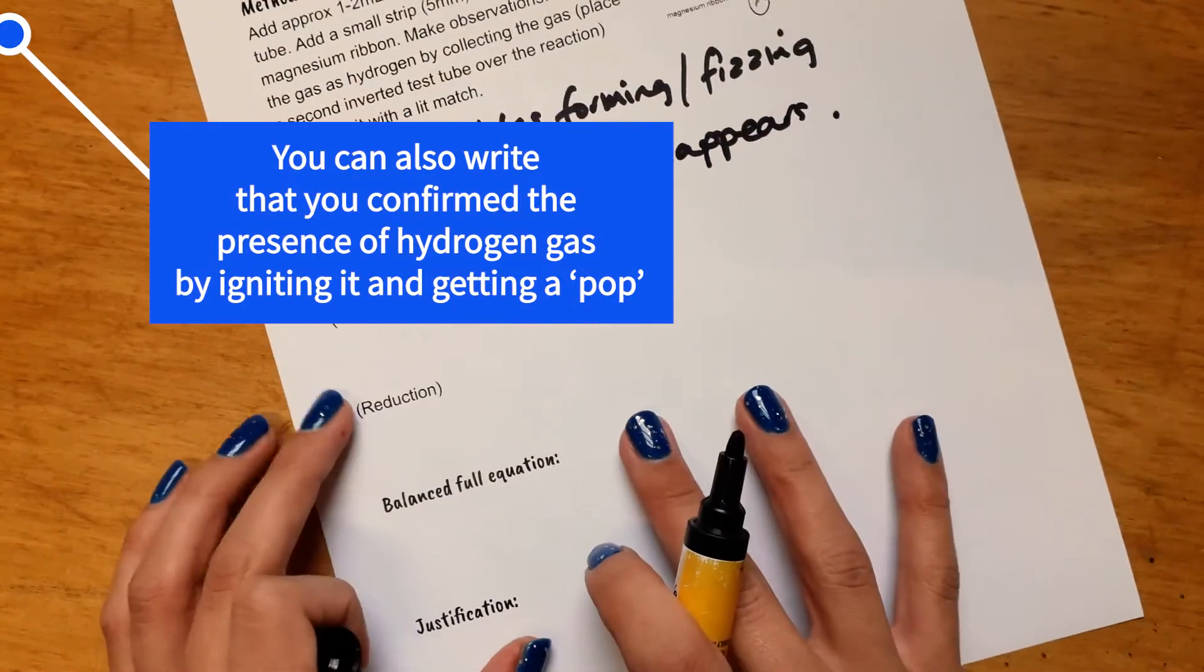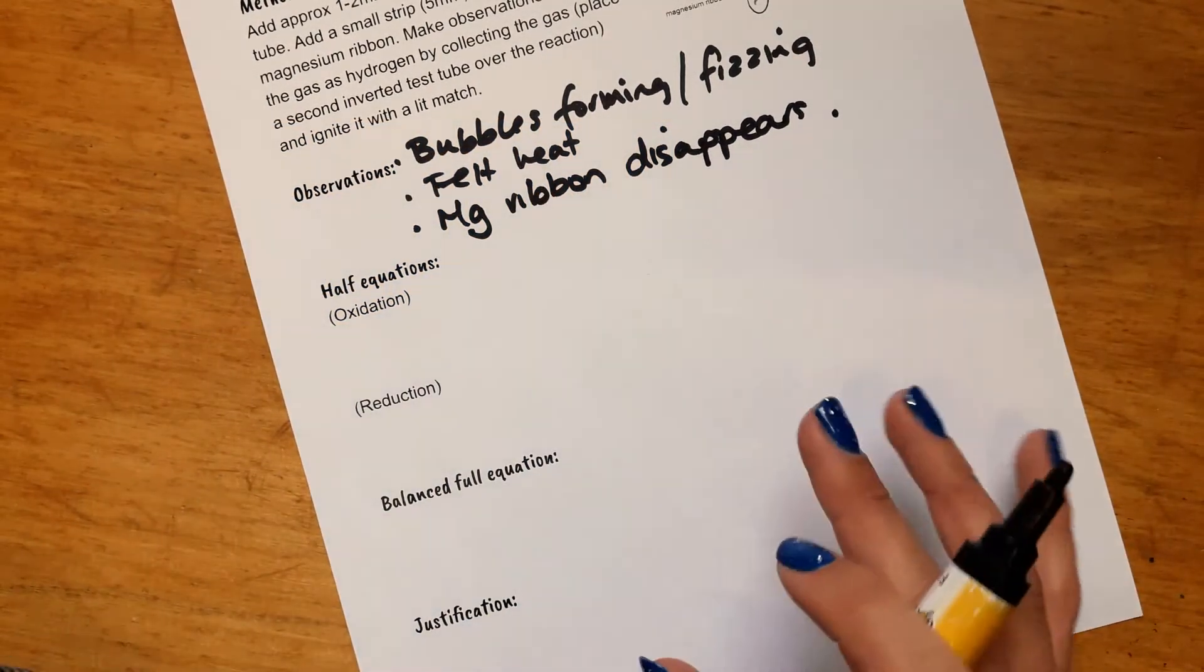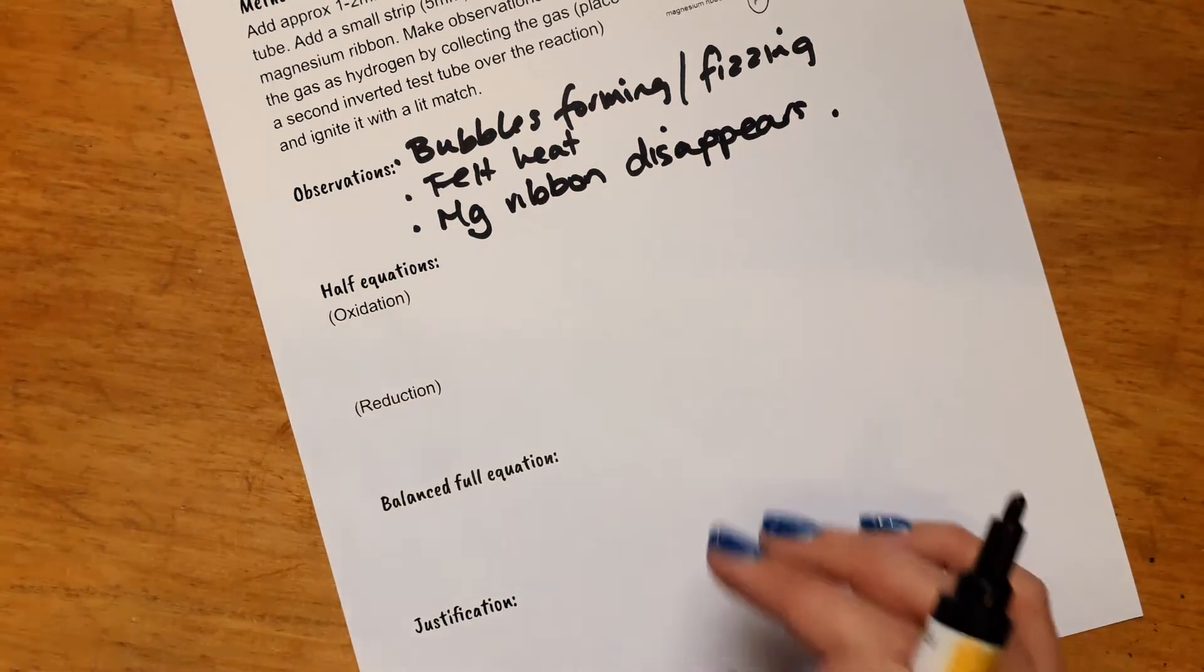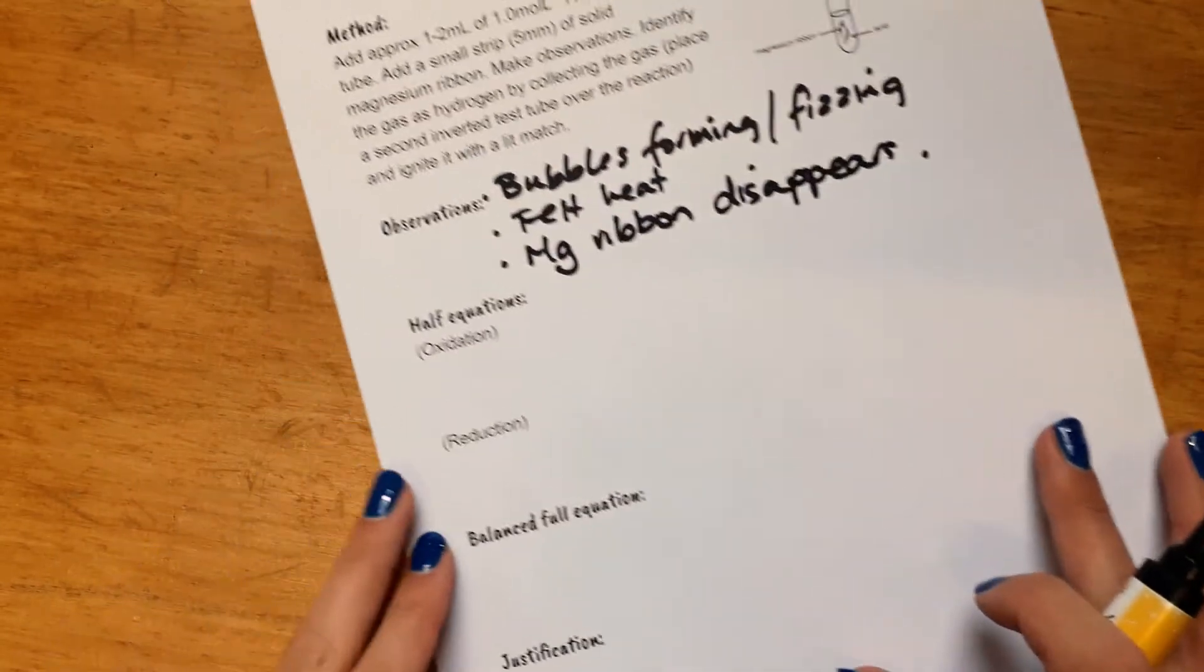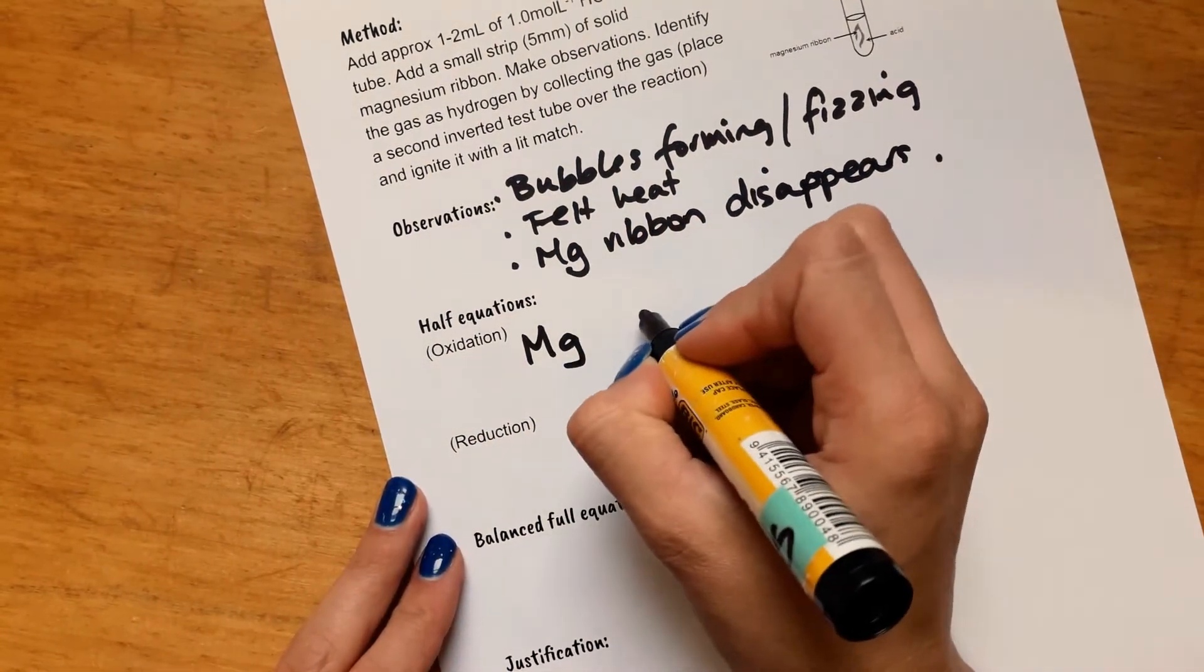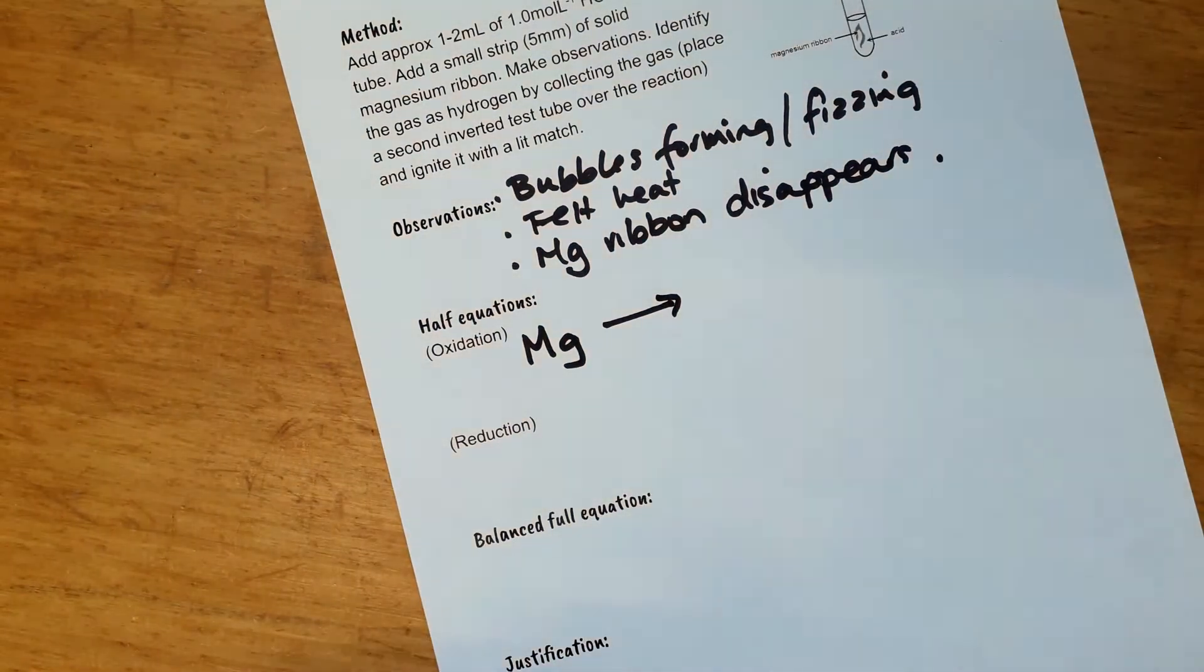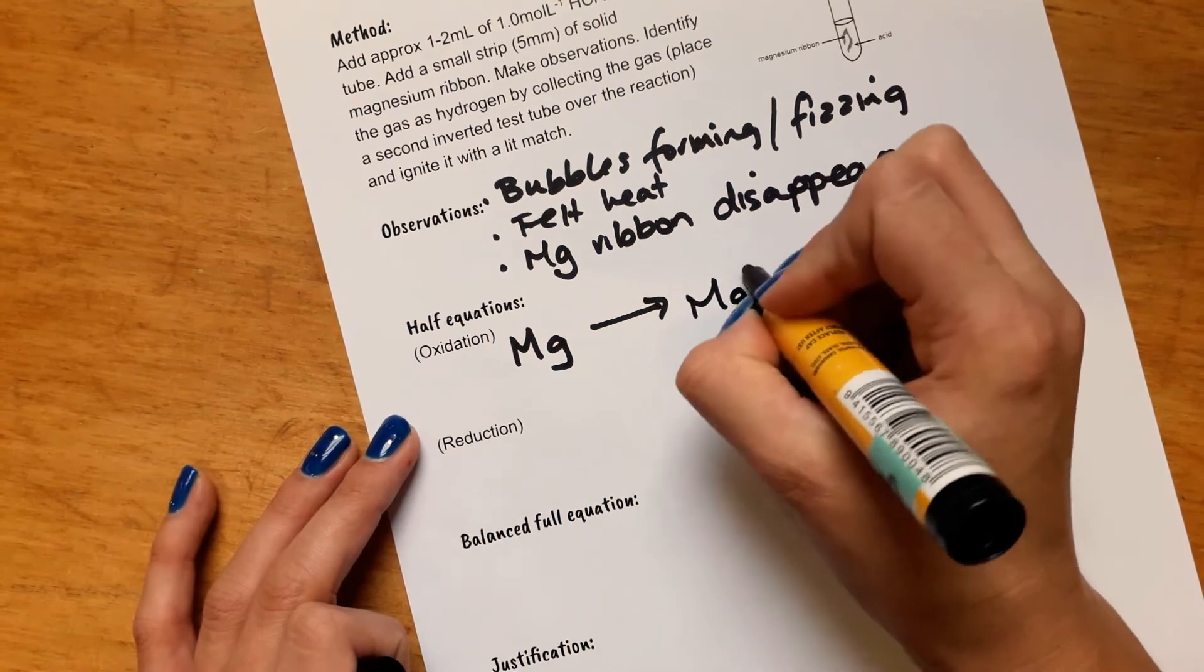So then writing the half equations, you have to show what is happening with this magnesium and what's happening with this acid. It takes a bit of practice and a bit of just experience. But oxidation is a loss of electrons. Now the magnesium is changing from the magnesium atom as a solid in the metal. And that is going to the magnesium ion. It's reacting. And now in the solution, you'll have magnesium ions dissolved in the liquid. So we're going to have Mg²⁺.